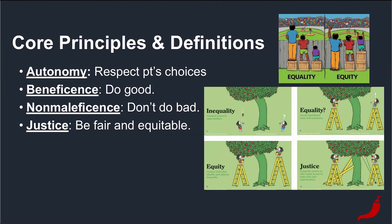I'm going to rapid-fire through some definitions. Autonomy is respect the patient's choices, even if it may harm them — 'auto' means self, 'nomi' means law, so self-law: respect the patient's own laws and principles. Beneficence means do good — what benefits the patient. Non-maleficence is don't do bad — 'mal' is bad, 'non' is no, so no bad. Justice is be fair and equitable. Just as a reminder, it's different than equality: equality is giving everyone equal resources, while equity is giving someone custom resources so everyone plays on the same level. Please be familiar with these for this test and also for the future of medicine.